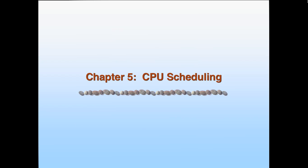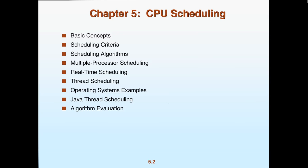So now CPU scheduling. I'm going to get through the first part today and continue next time. Topics include: scheduling criteria, algorithms, multiple process scheduling, real-time scheduling, thread scheduling, Java threads, and algorithm evaluation.